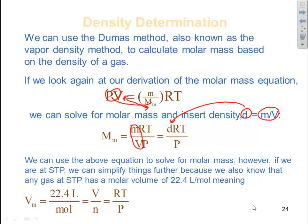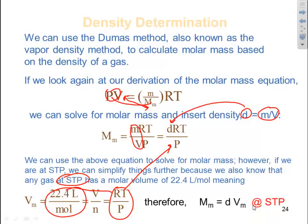So that means then if we are at STP, I can substitute that RT in this equation with 22.4 liters per mole. Therefore molar mass is equal to density times your molar volume at STP. This is a good important equation you can use sometimes, but you got to remember that it's conditions at STP, not all conditions, only at STP that the molar mass will equal density times your molar volume.